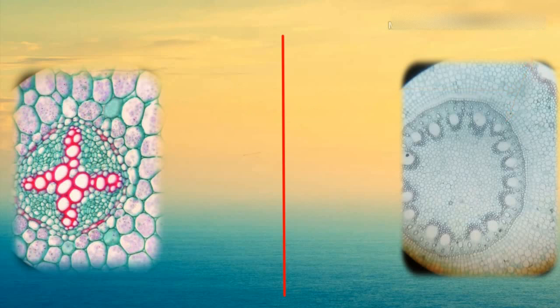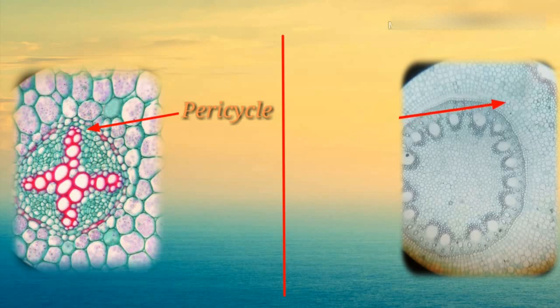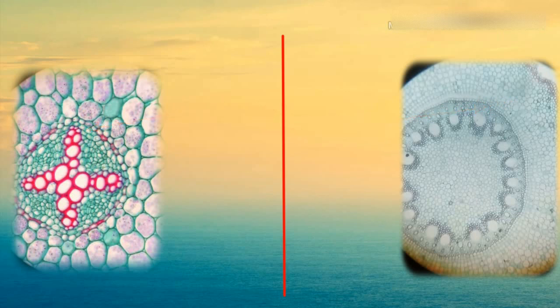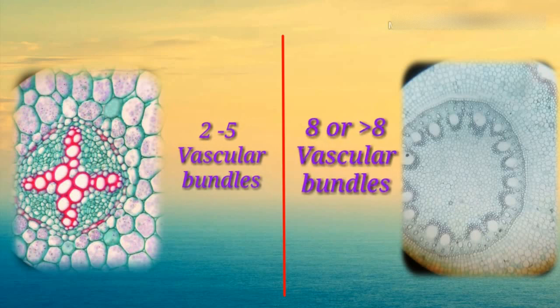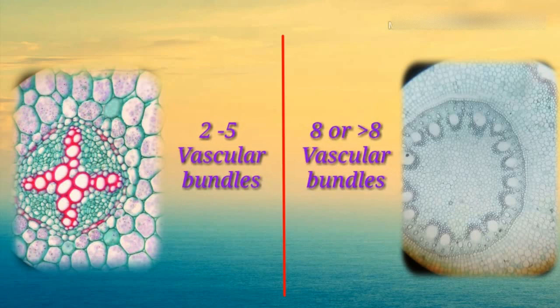In dicot root, the pericycle produces lateral roots, cork cambium, and part of vascular cambium. In monocot root, the pericycle produces lateral roots only. In dicot root, the number of vascular bundles varies from two to five, whereas in monocot root, vascular bundles are eight or more in number.